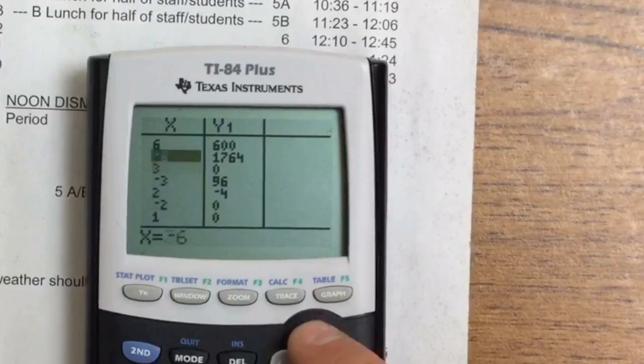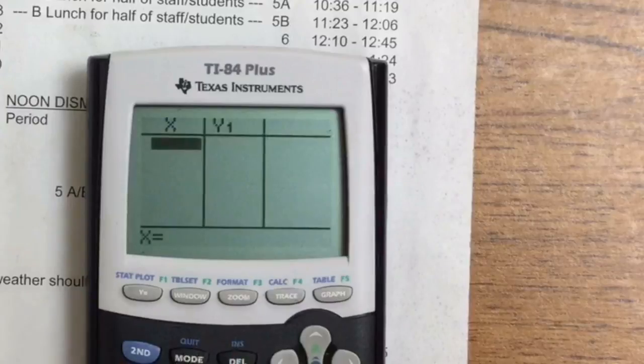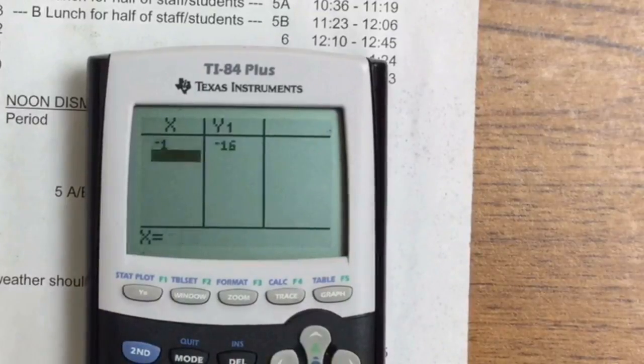And then if I have more to check, which I had more to check, that negative 1, I would say delete, delete, delete, delete, delete, delete. And say, well, is negative 1 a 0 as well? And no, it is not. So that's a pretty easy, quick way to get the zeros figured out once you have the list of possible rational zeros.